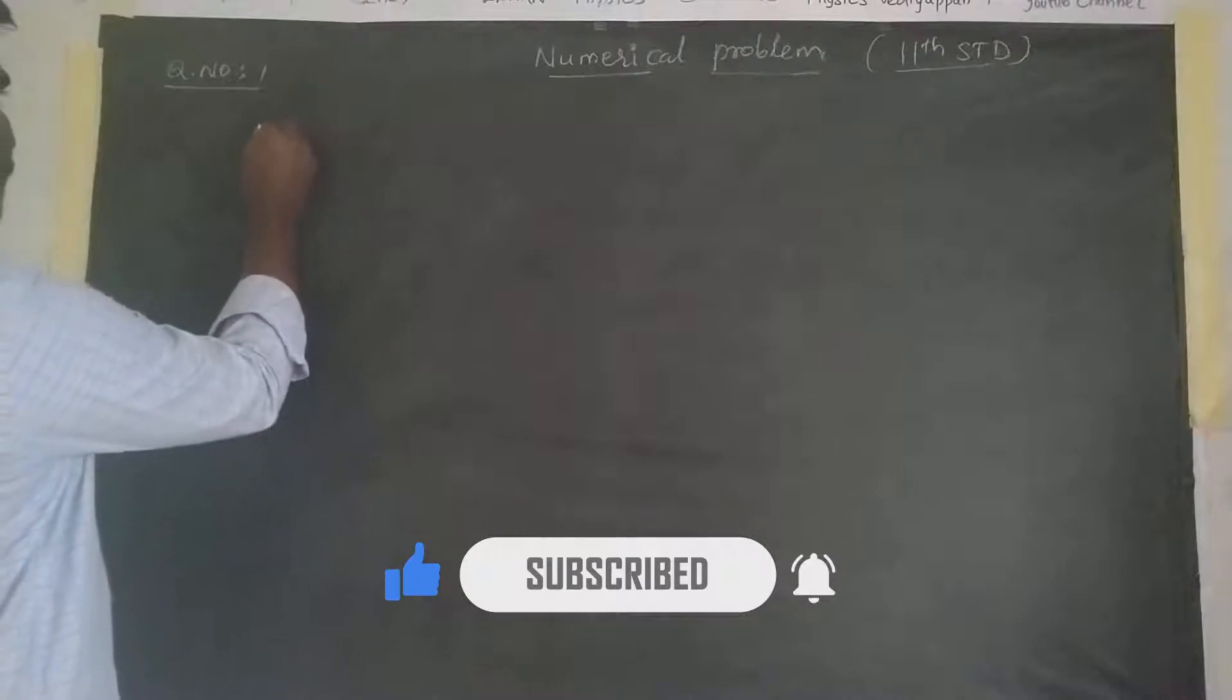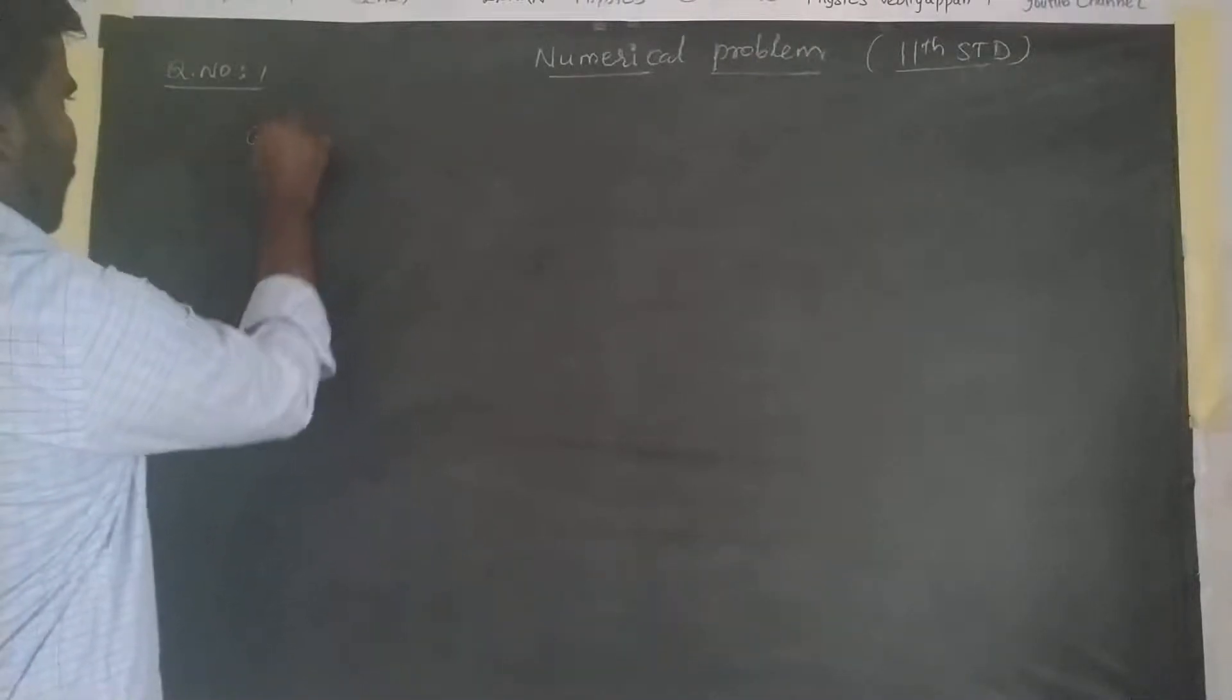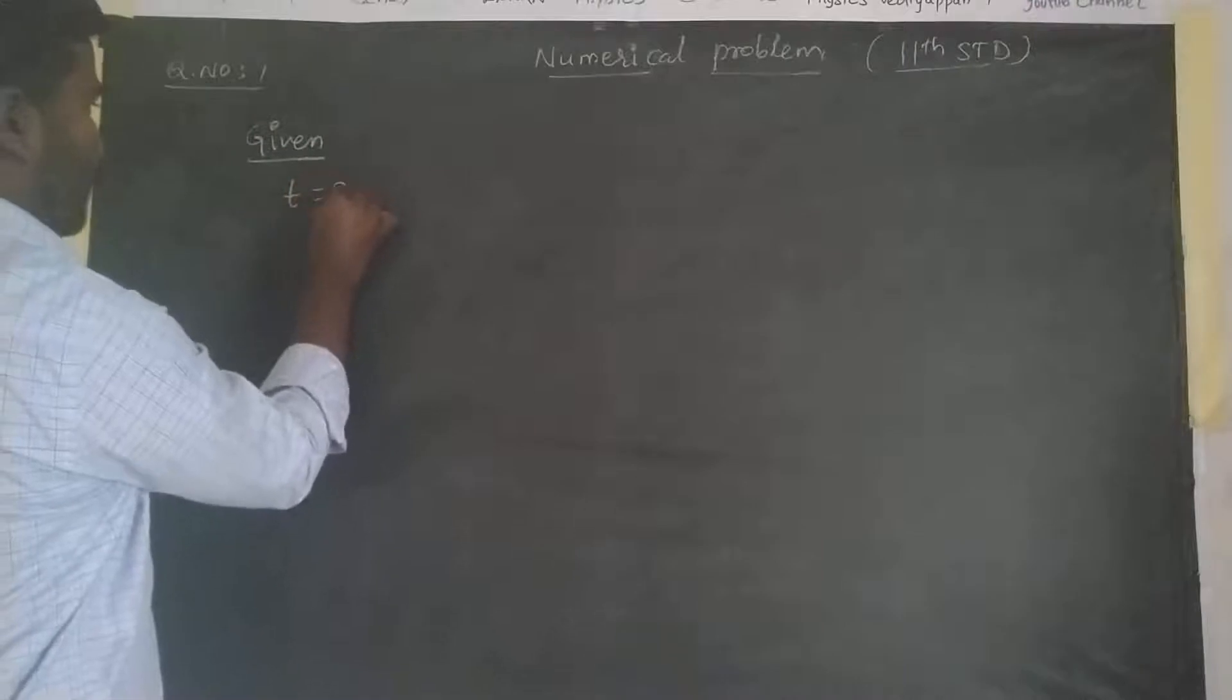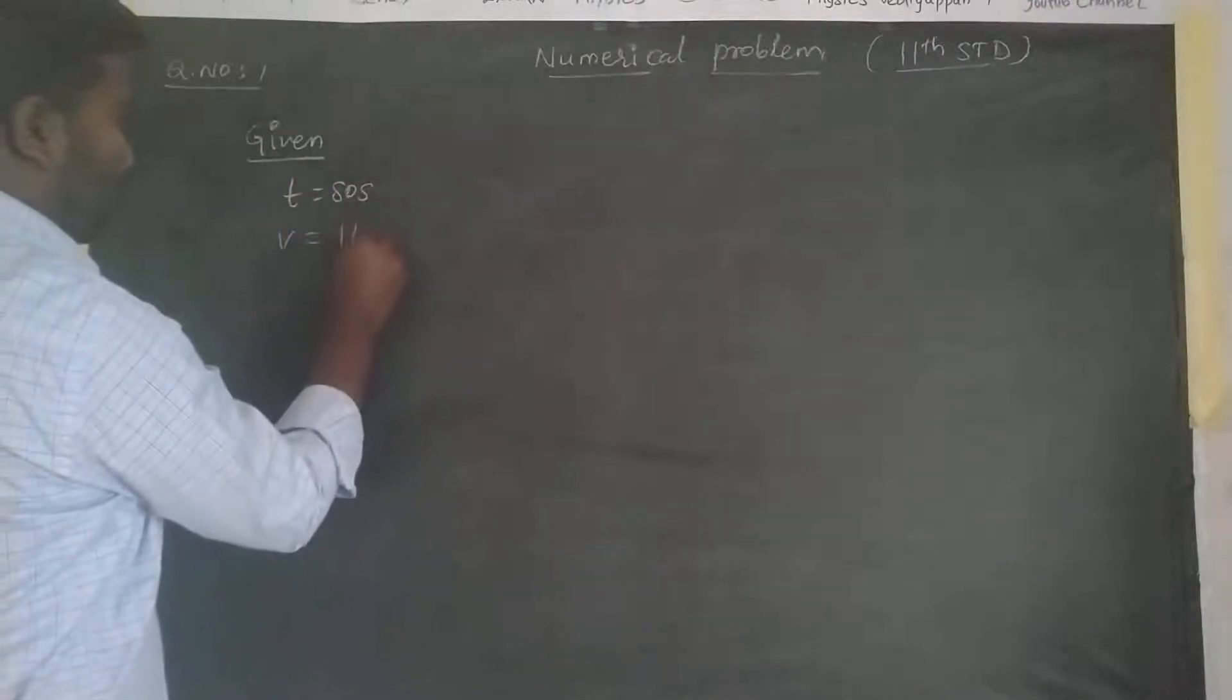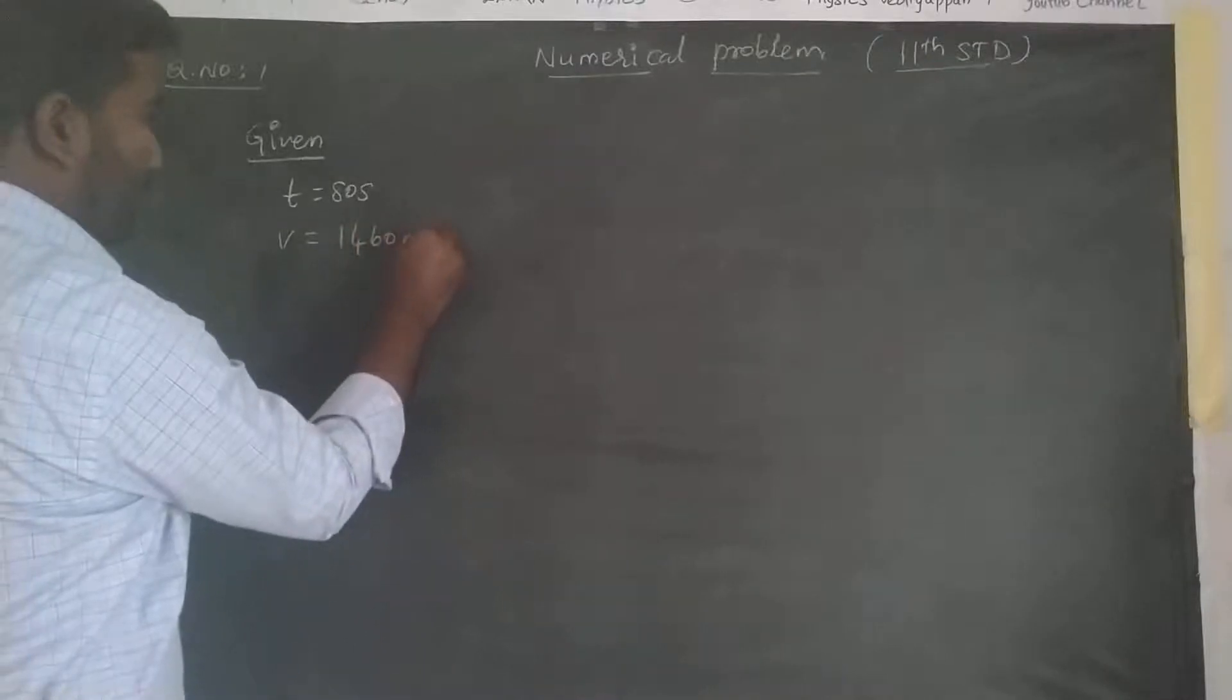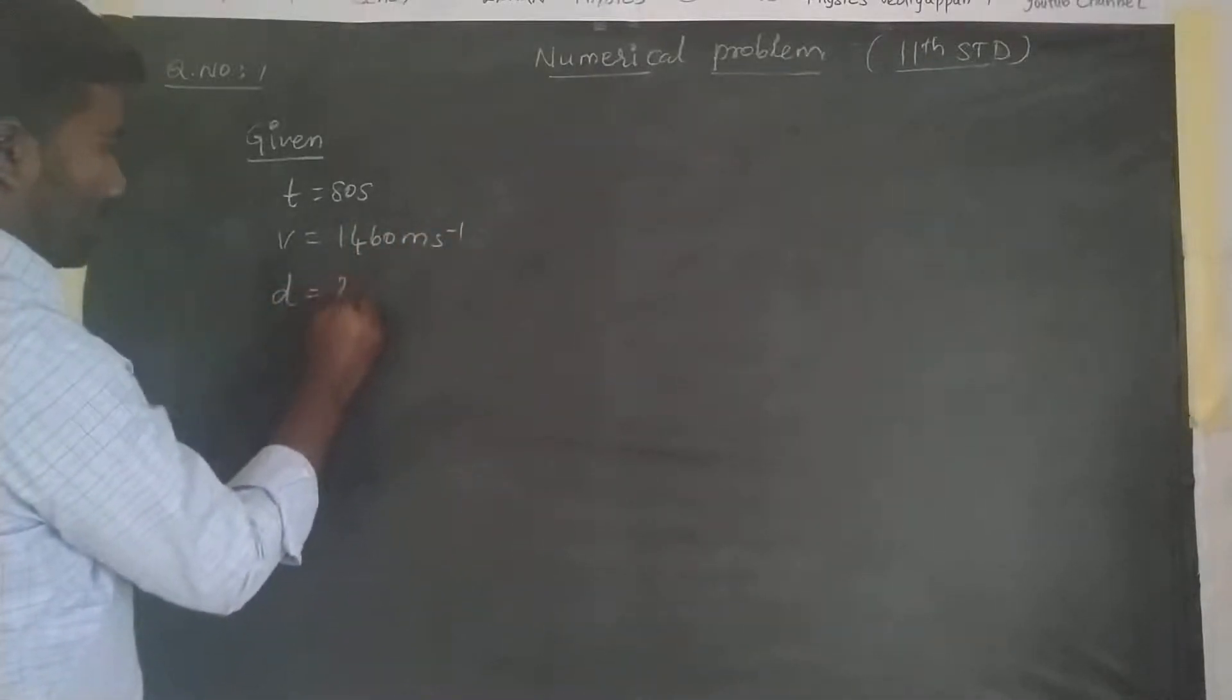Given data: t is equal to 80 seconds, and v is equal to 1460 meters per second. We need to find the distance.